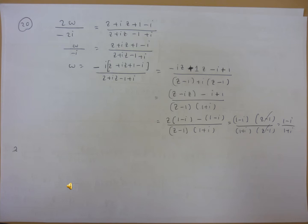So omega divided by minus i equals z plus i, z plus 1 minus i, divided by z plus i, z minus 1 minus i. So omega i equals minus i, and in brackets z plus i, z plus 1 minus i, divided by z plus i, z minus 1 plus i.